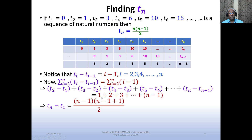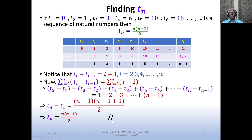So tₙ - t₁ = 1 + 2 + 3 + ... + (n-1). The sum of the first (n-1) natural numbers is (n-1)n/2 = n(n-1)/2. Since t₁ = 0, we get tₙ = n(n-1)/2. This completes the derivation and the full solution. Work out similar problems from a standard textbook — all the best!